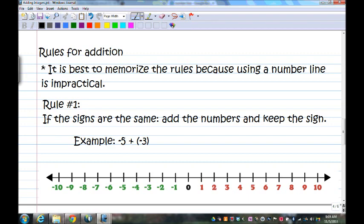So in other words, here I have a negative and a negative. They're both negative, so I'm going to add the numbers. Five plus three is eight, and I'm going to keep the sign.